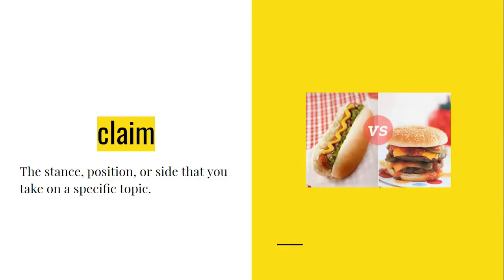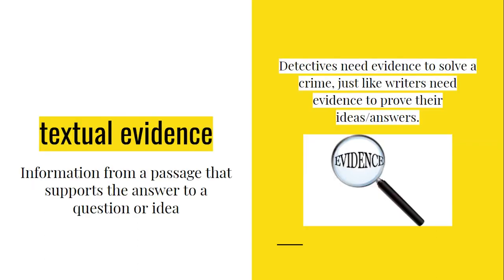First, before we can get started, we need to cover a couple vocabulary terms. The first term we need to review is the word claim. A claim is the stance, position, or side that you take on a specific topic. Textual evidence is information from a passage that supports the answer to a question or idea. Detectives need evidence to solve a crime, just like writers need evidence to prove their ideas, or in this case, their arguments.